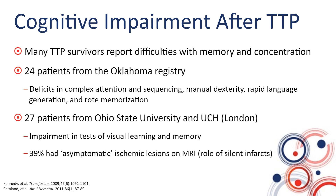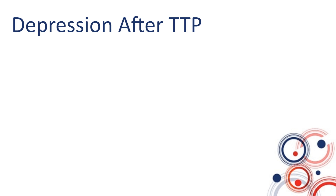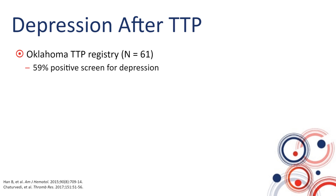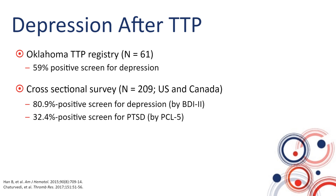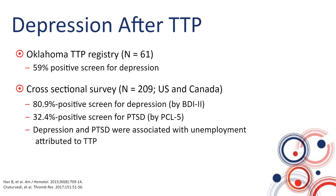Silent infarction leading to neurocognitive impairment is a phenomenon noted in other disorders such as sickle cell disease and also in the general population in older adults. Depression and other adverse psychological impairments are also common after TTP. In the Oklahoma Registry, 59% had a positive screen for depression. In a larger cross-sectional survey from the US and Canada, over 80% screened positive for depression and 32% for post-traumatic stress disorder. Depression and PTSD were clearly associated with unemployment attributed to TTP, highlighting significant social and economic consequences.